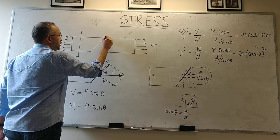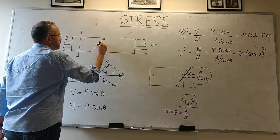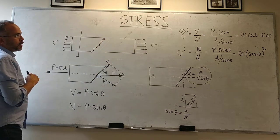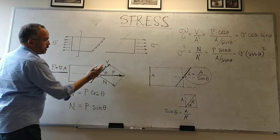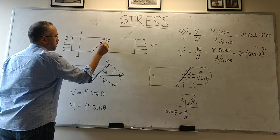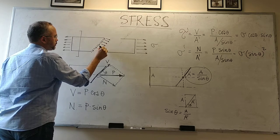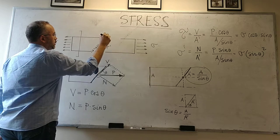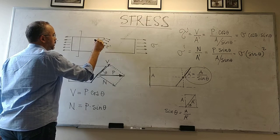Shear going this way, plus an axial stress in tension, normal stress going this way. Sigma and this one is tau.